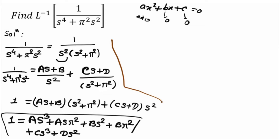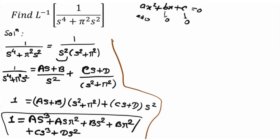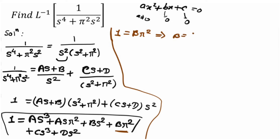Now, if we equate the coefficients: first, equate the constant terms on the left and right side. The constant on the left side is 1. On the right side, the term not containing s is B·pi squared. So equating constants gives us B·pi squared equals 1, therefore B equals 1 upon pi squared.